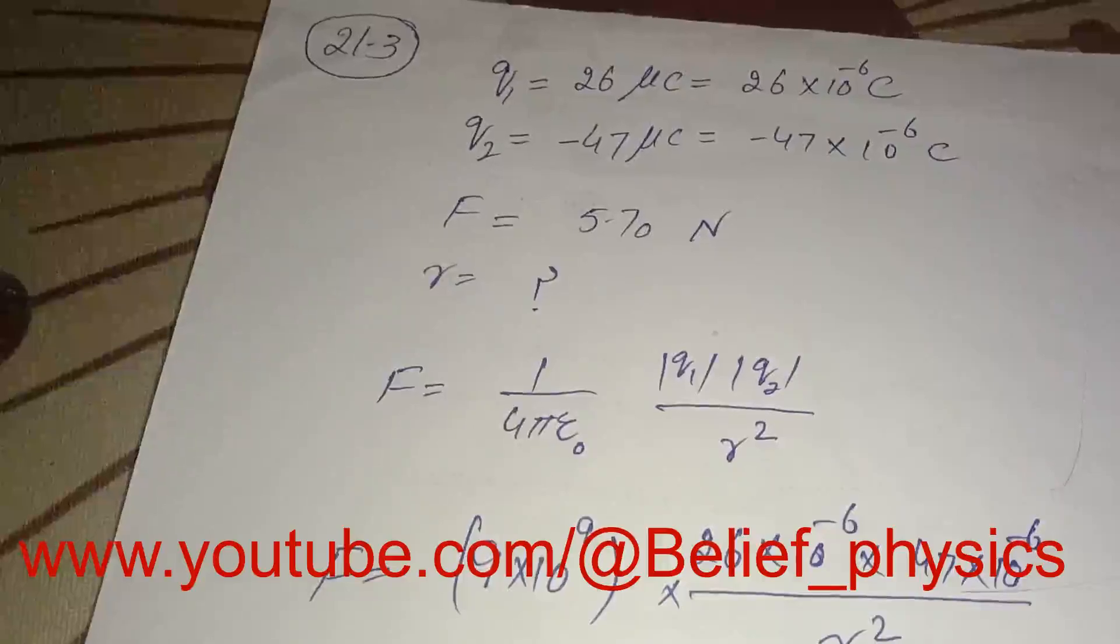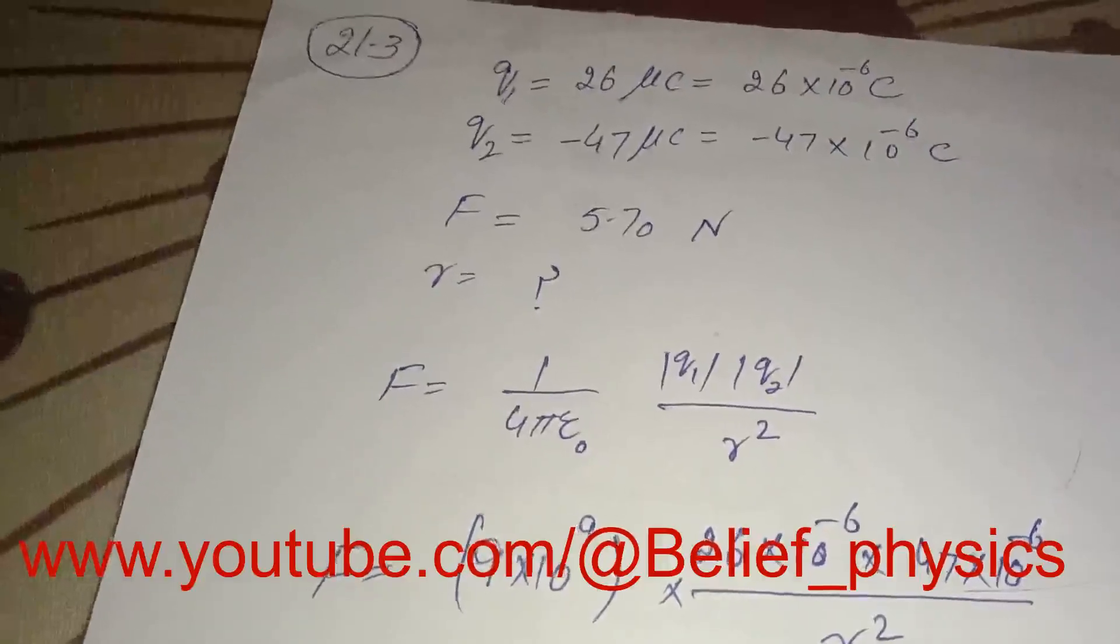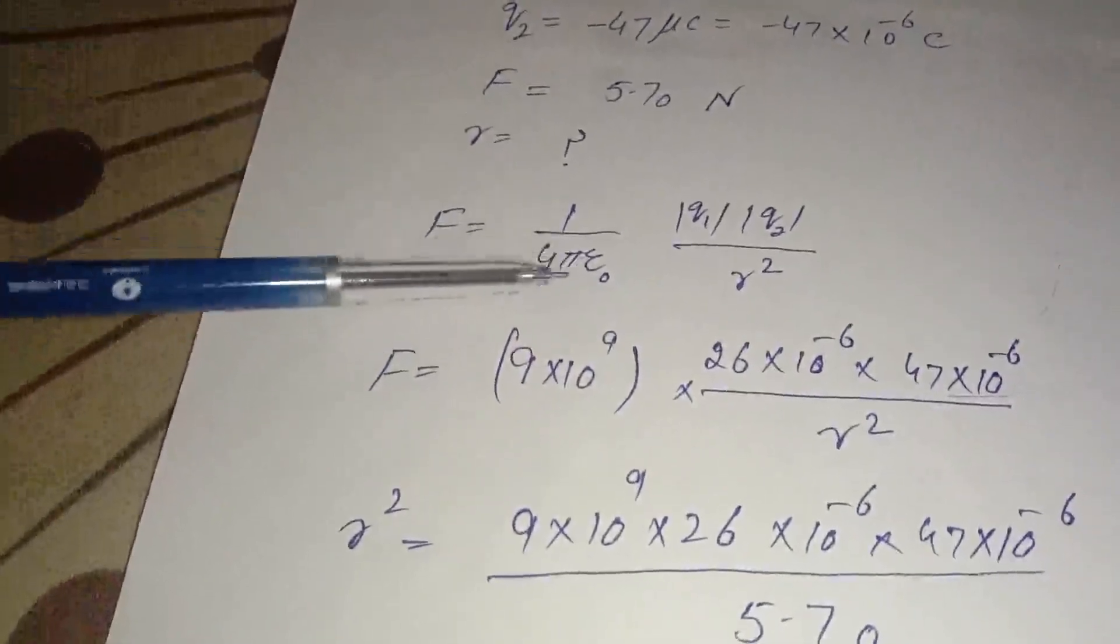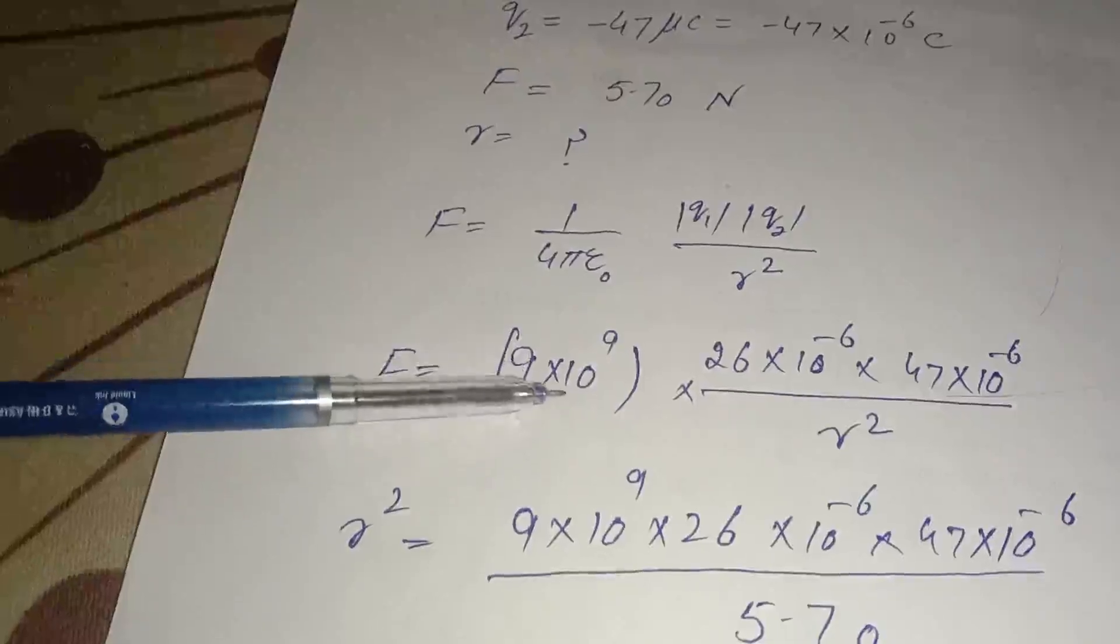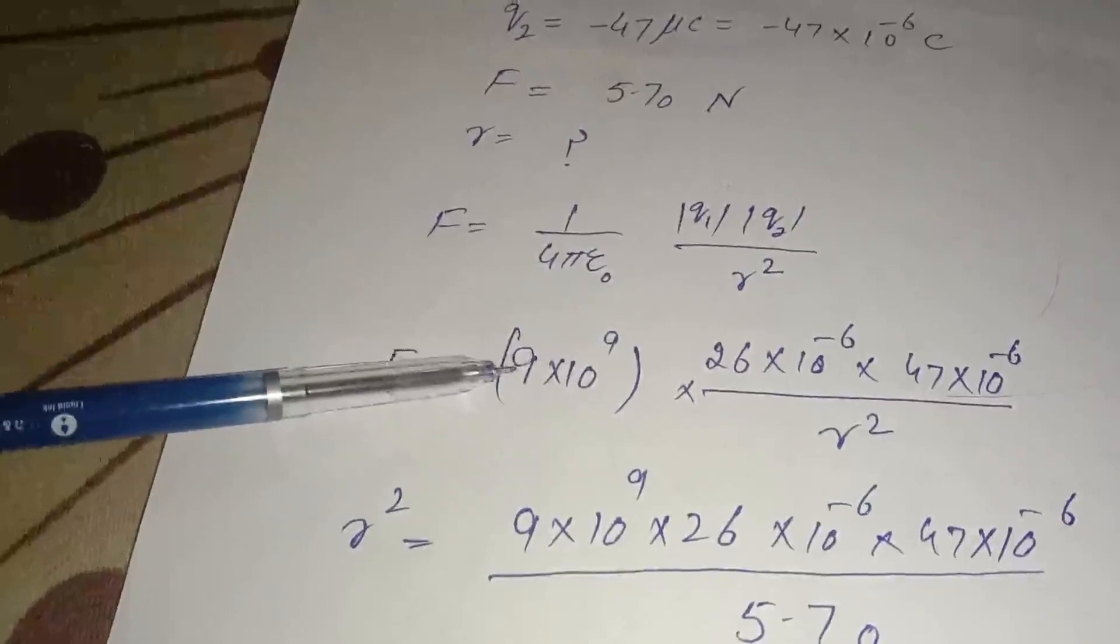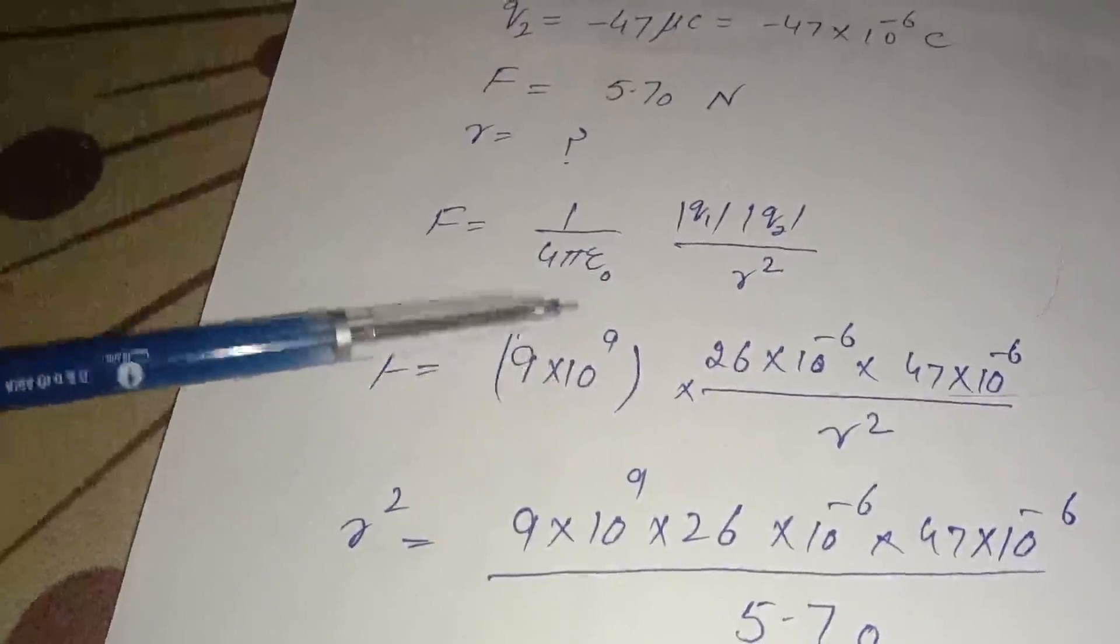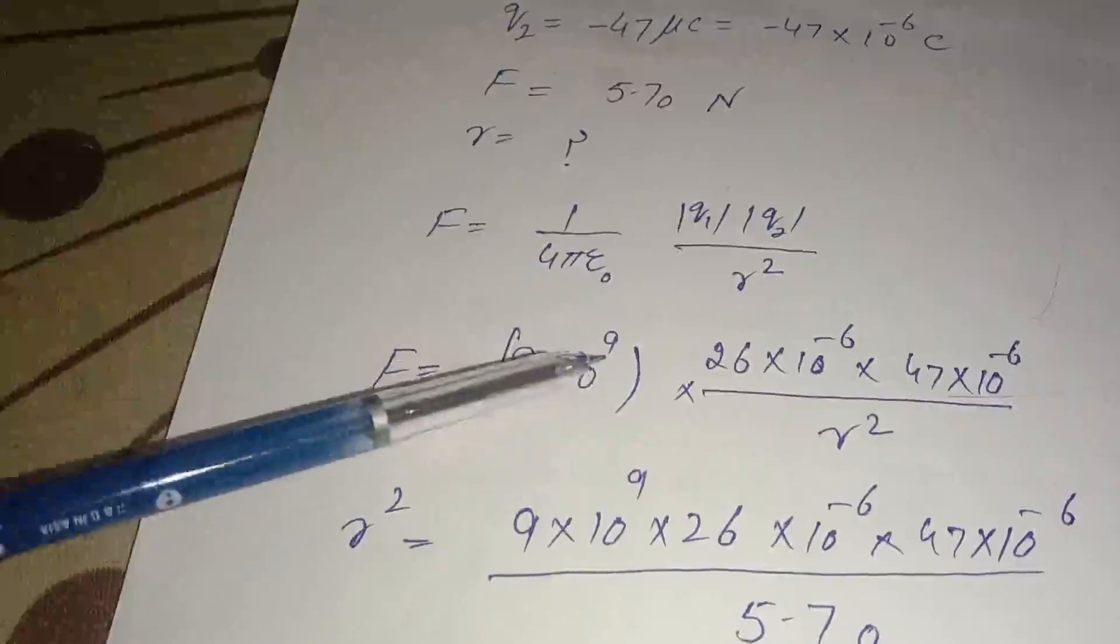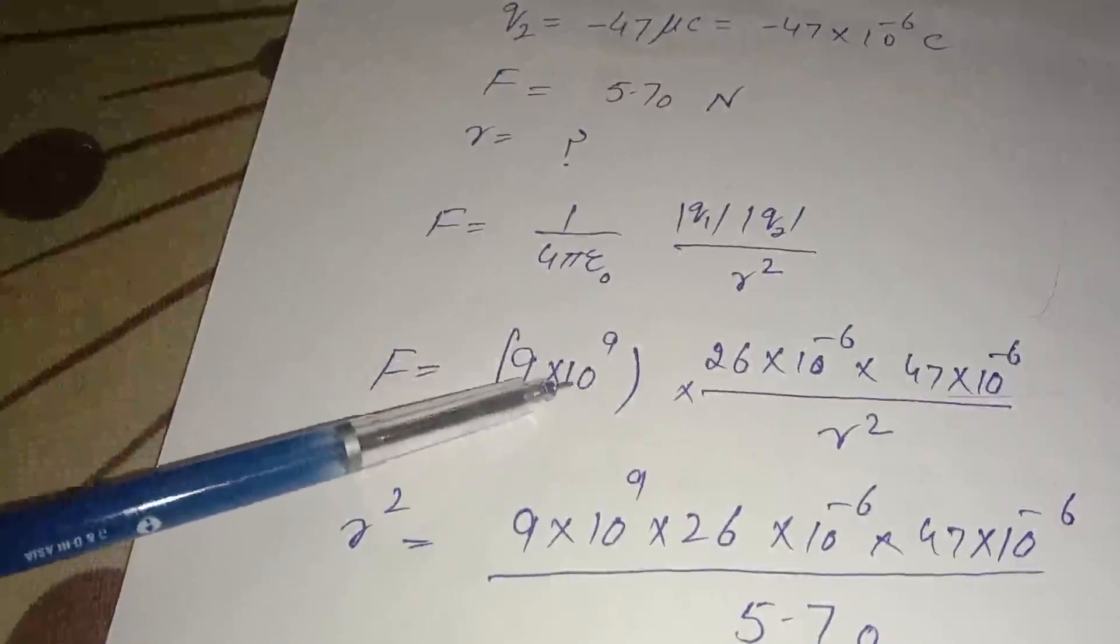We put the value there. I use the Coulomb constant k, which is equal to 1/4πε₀ as 9 × 10^9. You can use 8.99 × 10^9, but to make calculations easier, I use 9 × 10^9 Newton meter squared per coulomb squared.